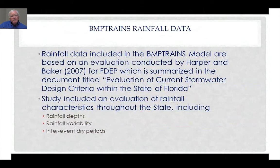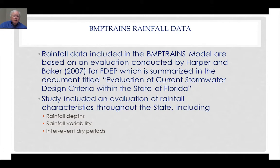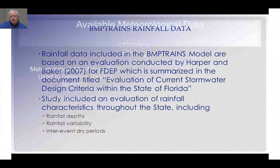The BMP Trains model uses rainfall data which were developed by Harper and Baker in 2007 as a project for FDEP, summarized in the document titled Evaluation of Current Stormwater Design Criteria within the State of Florida. This study included an evaluation of rainfall characteristics throughout the State of Florida and included information on rainfall depths, variability in rainfall, and inter-event dry periods.